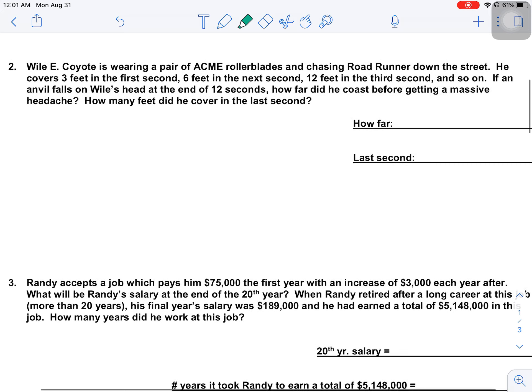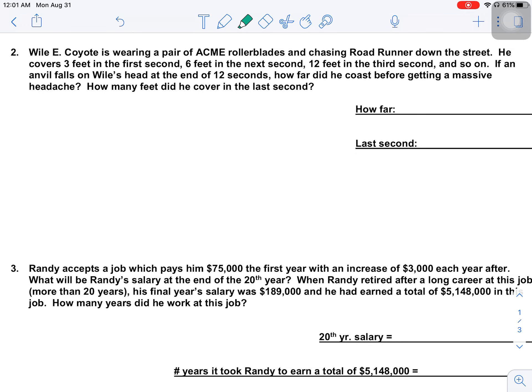Let's talk about number two here. One of my favorite Looney Tunes characters here. Wile E. Coyote is wearing a pair of Acme rollerblades. This is not going to end well. And chasing Road Runner down the street. He covers 3 feet in the first second, 6 feet in the second second, 12 feet in the third second. So let's see, 3, 6, 12. That's a geometric sequence with a common ratio of 2, right? 3 times 2 is 6, 6 times 2 is 12. Keeps on going.